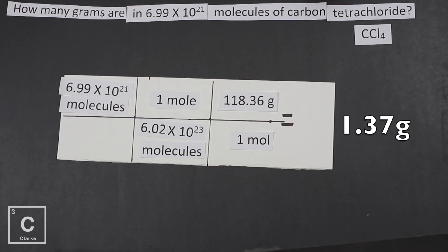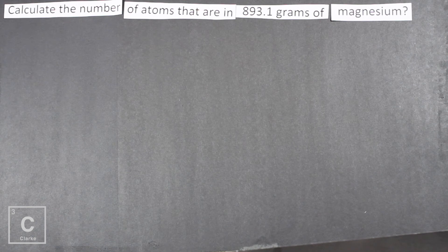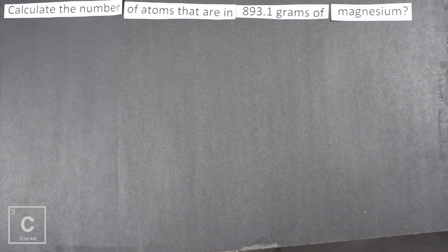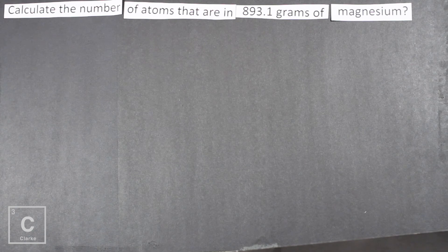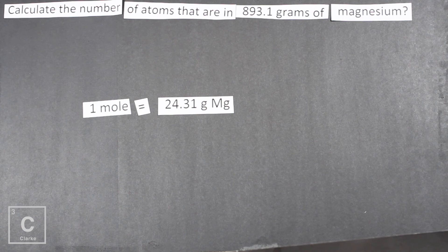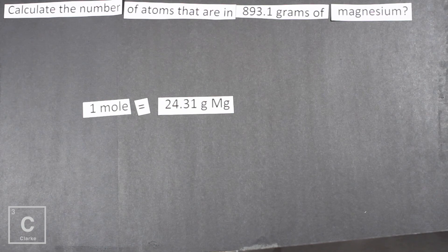I have one more example to help us really understand this. Calculate the number of atoms that are in 893.1 grams of magnesium. Now the last two examples I did were both of compounds. This is just of an element. The process is exactly the same but a little bit shorter because you don't have to calculate the molar mass. You just look at the periodic table. And if we look at the periodic table for magnesium we see that magnesium's molar mass is 24.31. One mole of magnesium is 24.31. We will need to use that in this problem because this problem does mention grams. It does not mention moles. That tells us we've got to use both of our conversion factors.